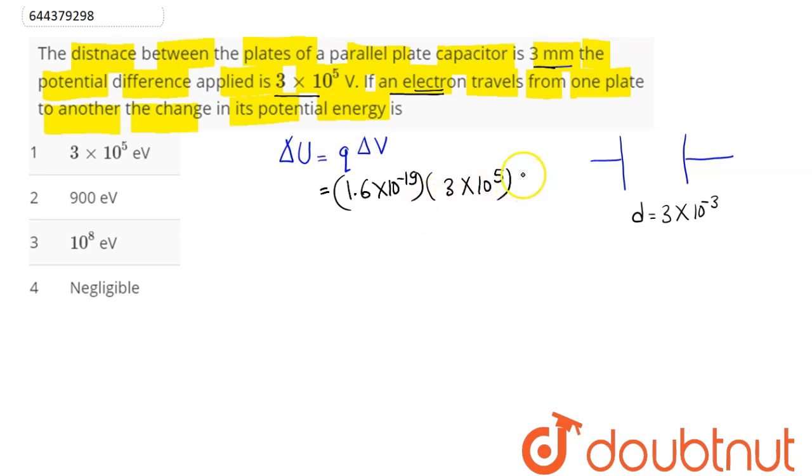So we can say here this is in joule, but we need here in electron volt. So to convert into electron volt, we divide by the charge on an electron, that is 1.6 into 10 power minus 19. So this here comes in electron volt, and so we can say this is equal to 3 into 10 power 5 electron volt.